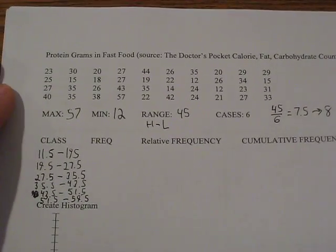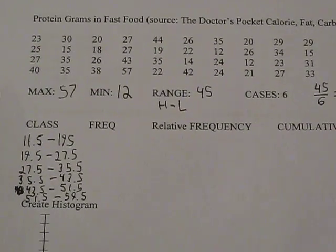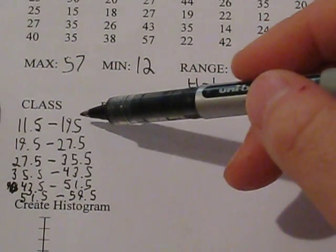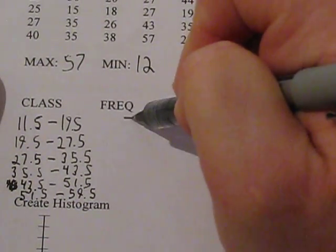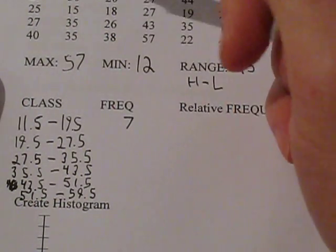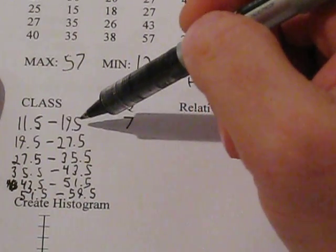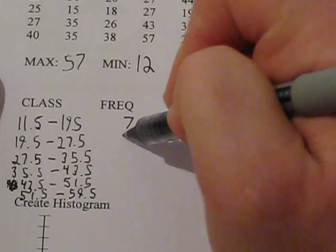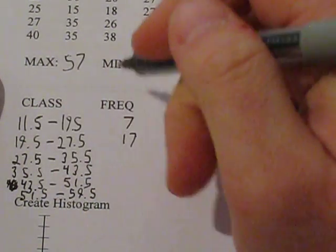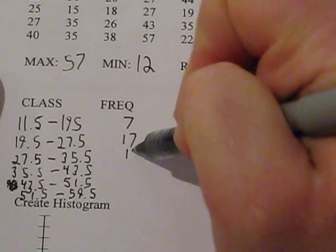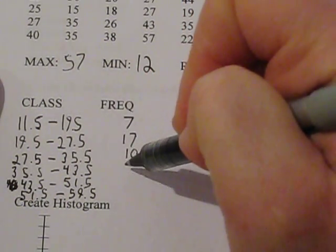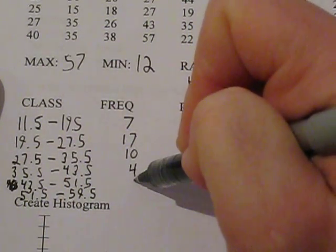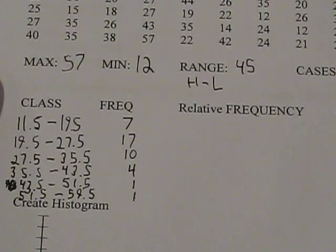We're going to then talk about the frequency here. How many pieces of data were between 11.5 and 19.5? I've done the counting for you. There were 7 pieces of data in this range, 17 within 19.5 and 27.5, 10 between 27.5 and 35.5, 4 between 35.5 and 43.5, and one in each of these last two categories.